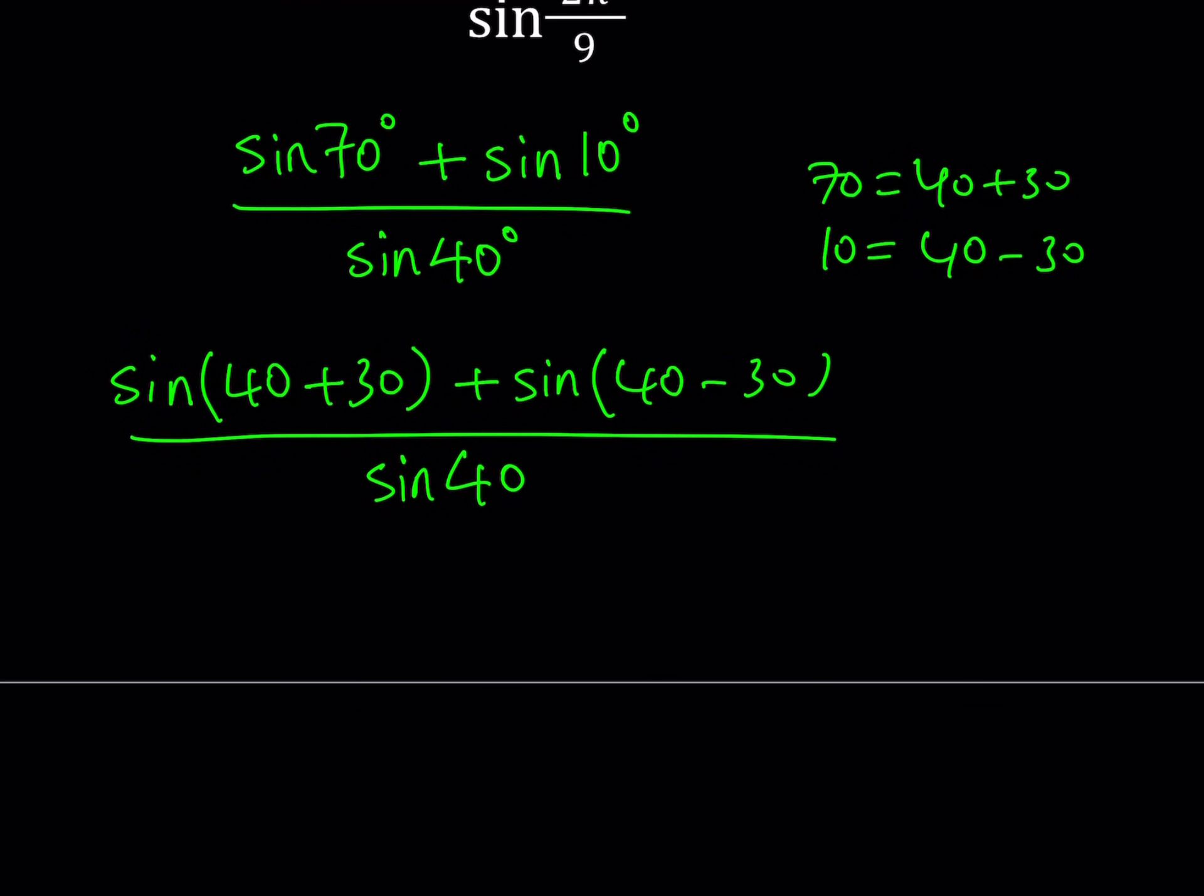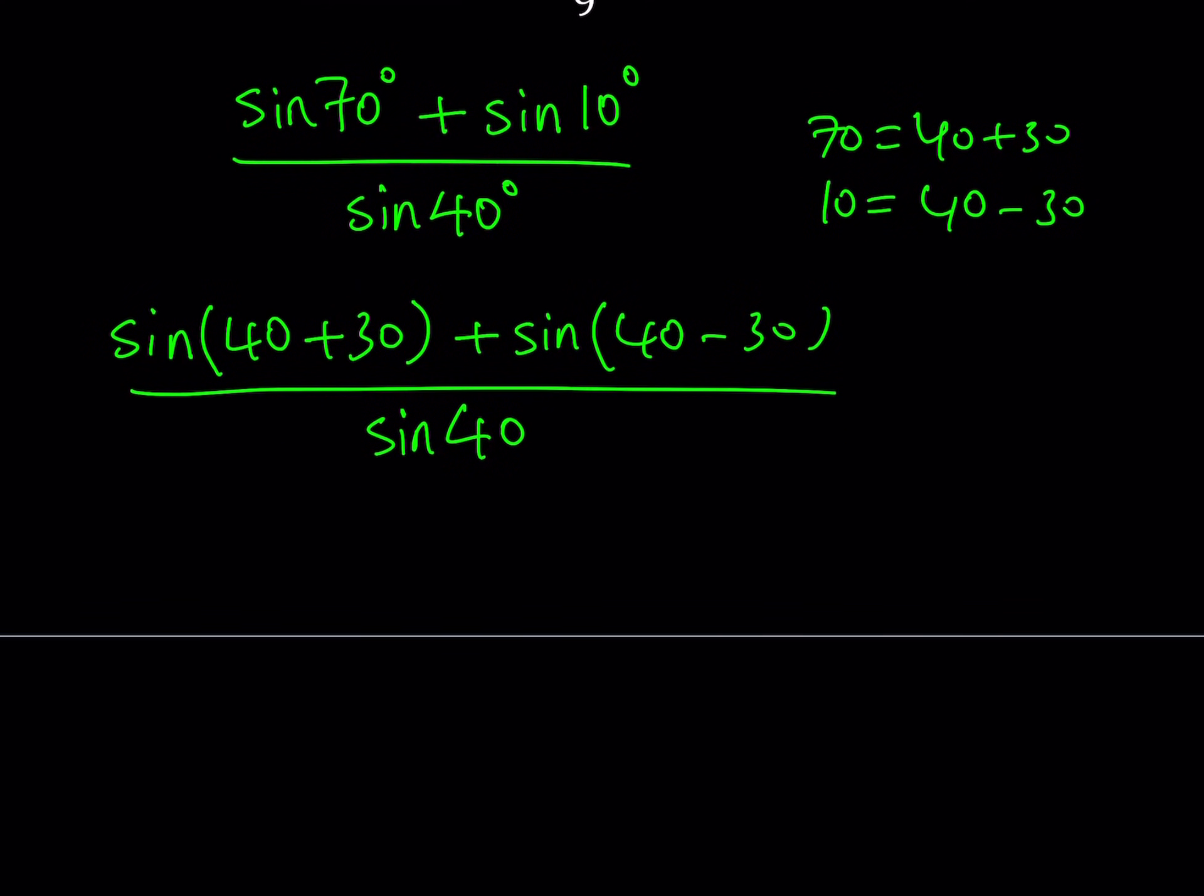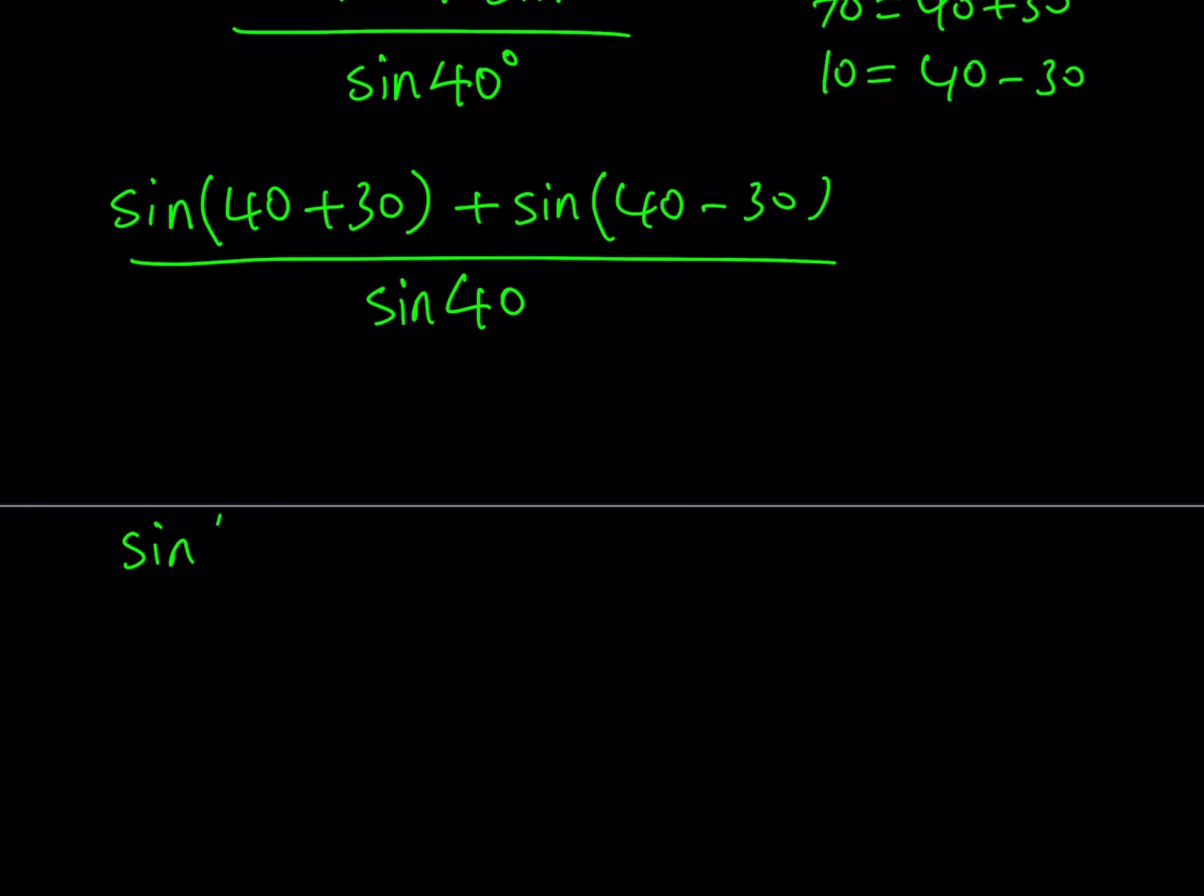Now, we do have a formula for sine α plus β, and what does that look like? Sine α plus β can be written as sine α cosine β plus sine β times cosine α. And if you change this to minus, then you're going to change it to minus here as well. So it's basically going to keep the same sign.